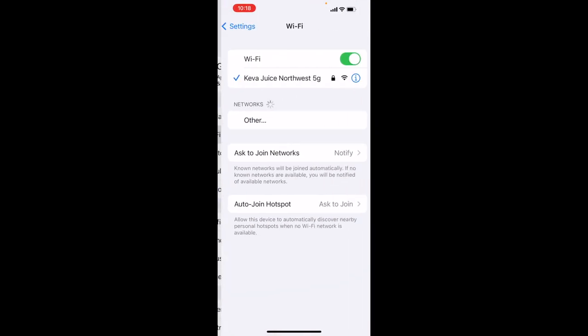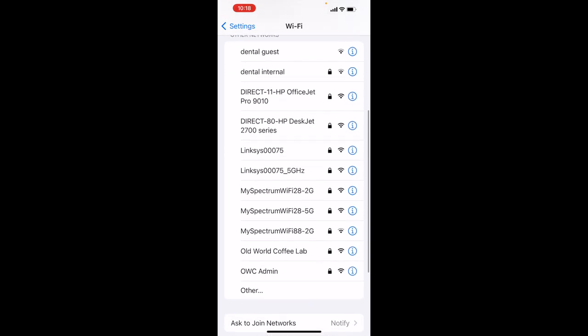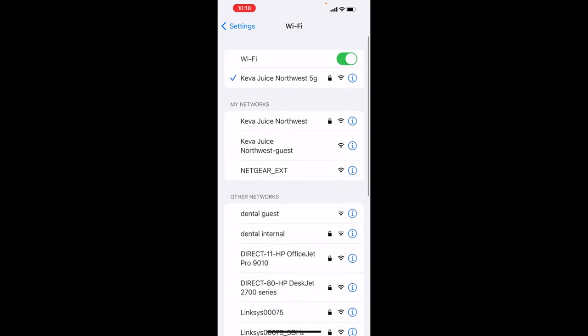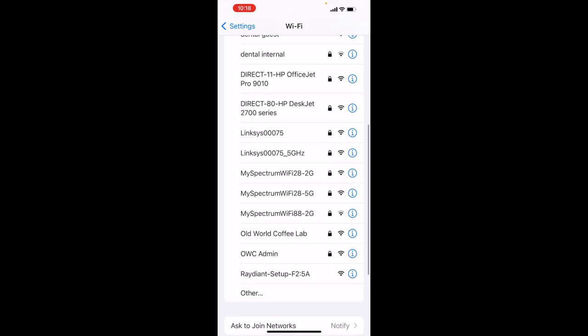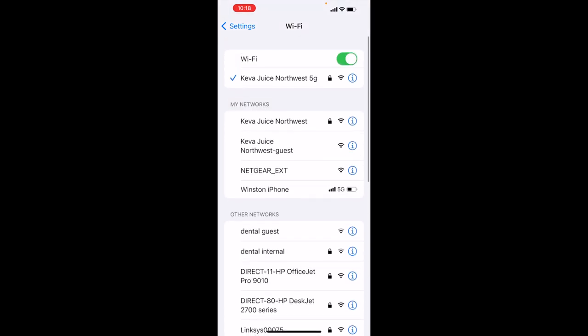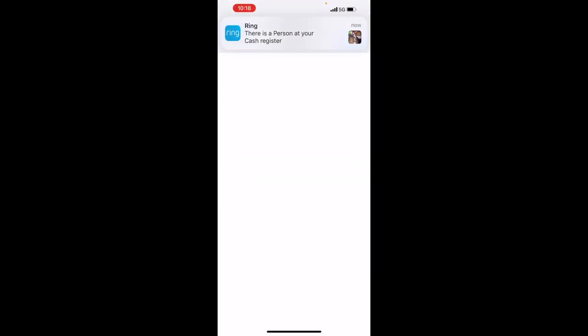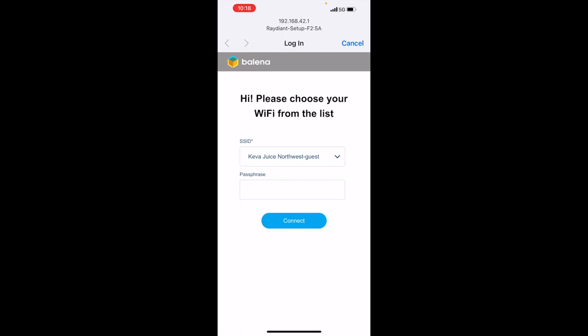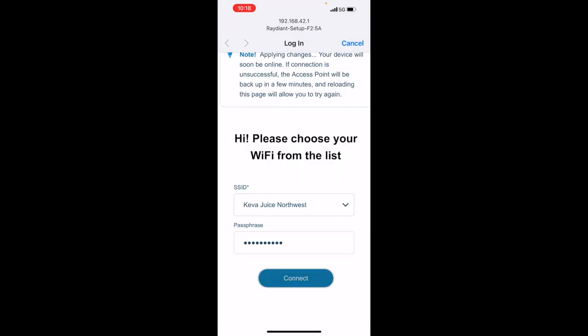Okay, so we're going to go ahead and connect to the Radiant network here, so I've got to find it. Give it a second to refresh. There it is—boom, so Radiant. Now we're going to connect to that and set this up to our WiFi network. This is simply programming our Radiant computer to our WiFi network.